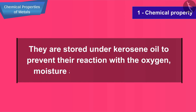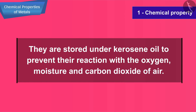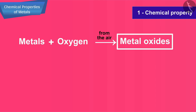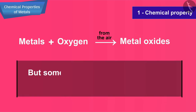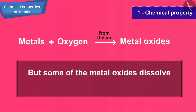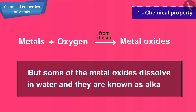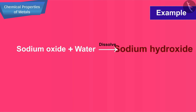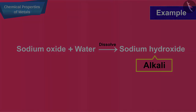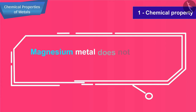This is the reason why sodium and potassium are stored under kerosene oil, to prevent their reaction with the oxygen, moisture, and carbon dioxide of air. The metal oxides formed in these reactions are mostly insoluble in water, but some dissolve in water and are known as alkalies.